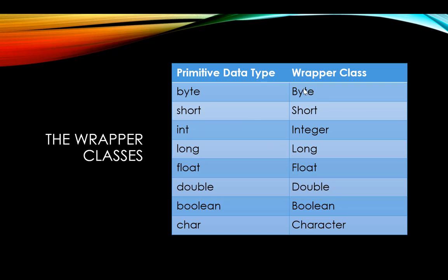For the byte primitive we have the Byte wrapper class, starting with an uppercase B following the naming convention of classes. Short has Short, int has Integer, long has Long, float has Float, double has Double, boolean has Boolean, and char has Character. So mostly the same names, except that int maps to Integer and char maps to Character. All of these wrapper classes start with an uppercase character.